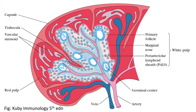In between the red and the white pulp lies the marginal zone. In the marginal zone, you find a few lymphocytes including dendritic cells, macrophages, as well as a few B cells.